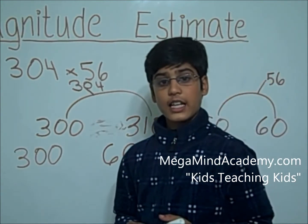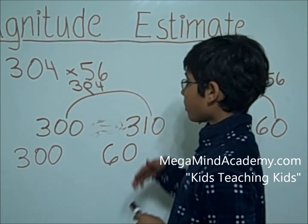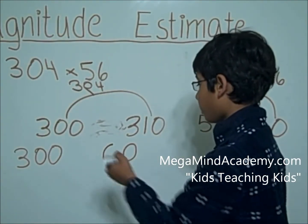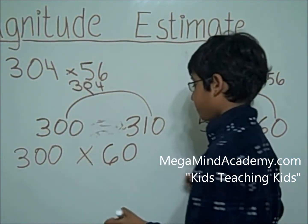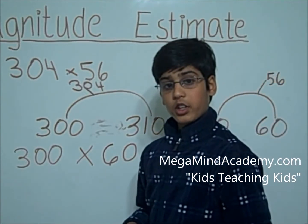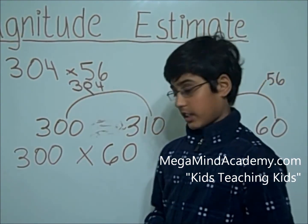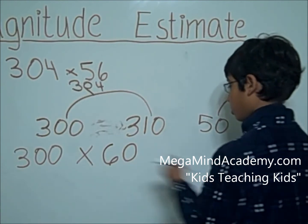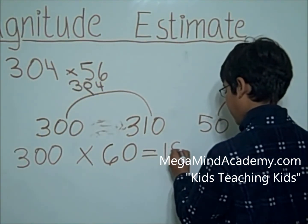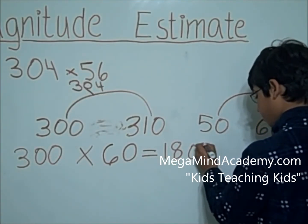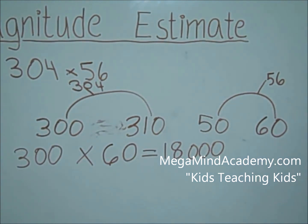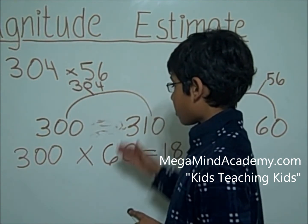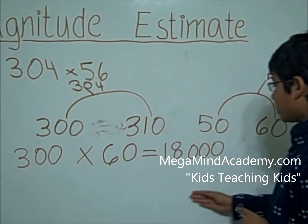Now, the actual question is 304 times 56 — you are multiplying. So we're going to put the multiplication sign in our estimate. The multiplication question is 300 times 60. 300 times 60 equals 18,000. So the magnitude estimate for 304 times 56 is 300 times 60 equals 18,000.